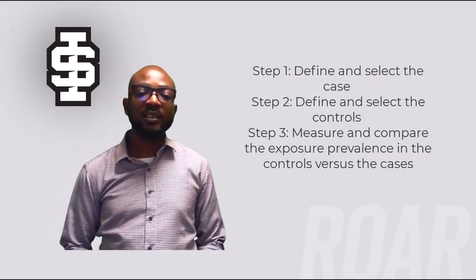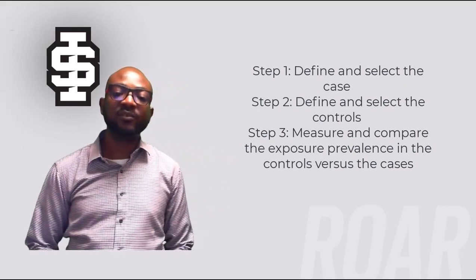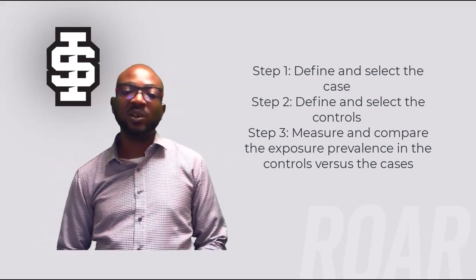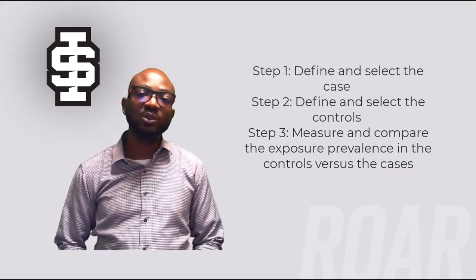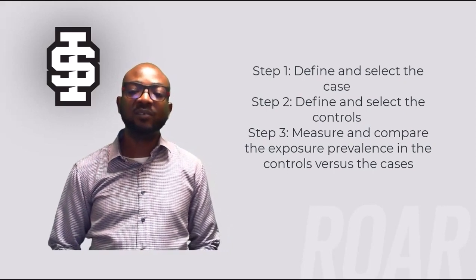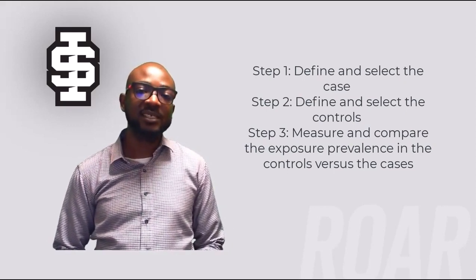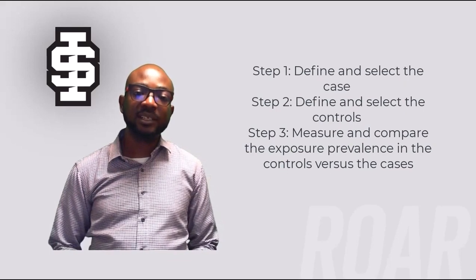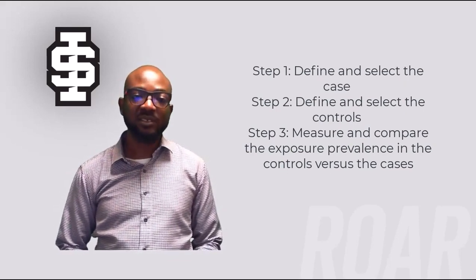There are three key steps in conducting a case-control study. Step one: find and select the cases from a group that has a disease or health outcome of interest. Step two: define and select the controls, who are representative of the same source population that gave rise to the cases. Step three: measure and compare the exposure prevalence in the controls versus the cases.